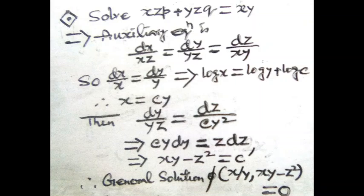We have computed two independent solutions. The general solution will be φ(x/y, xy − z²) = 0, because x/y equals one constant and xy − z² is another constant. This is the general solution of this Lagrange equation.